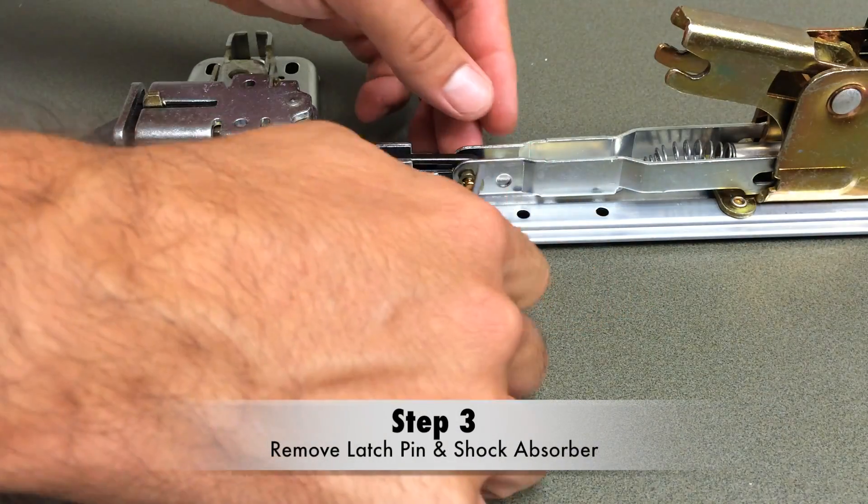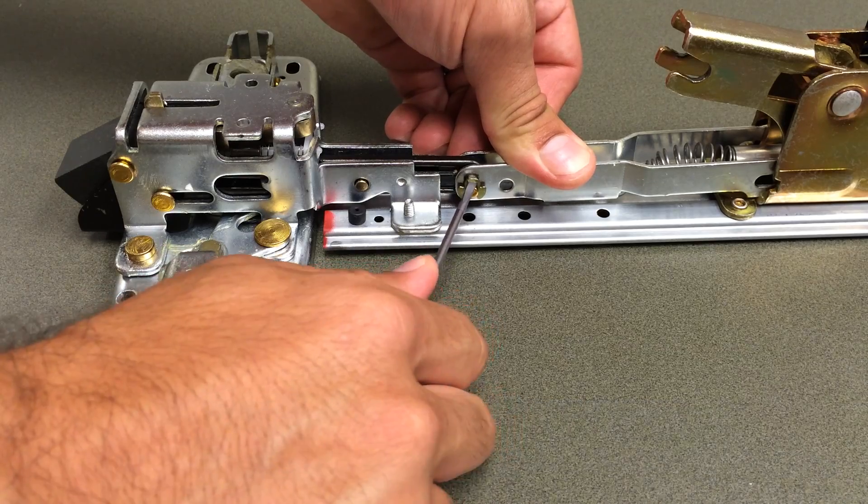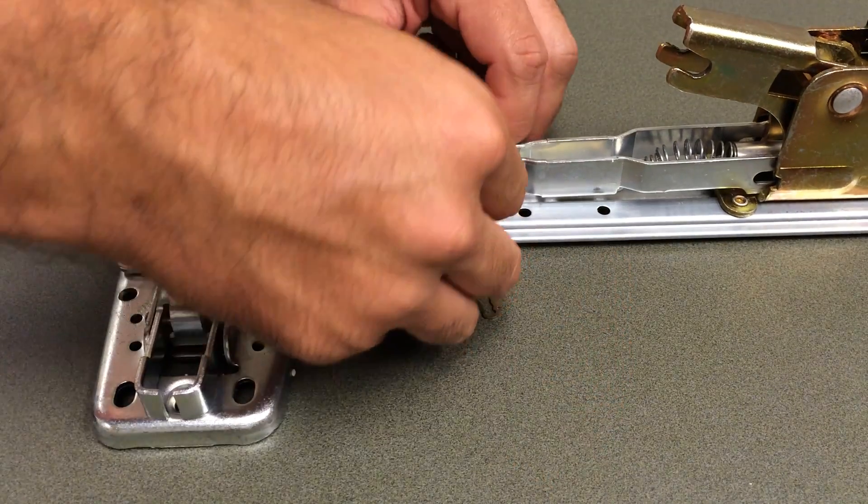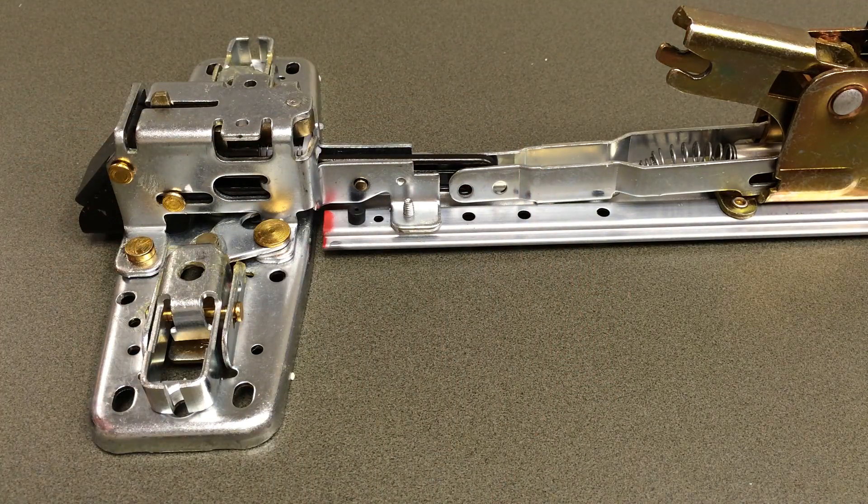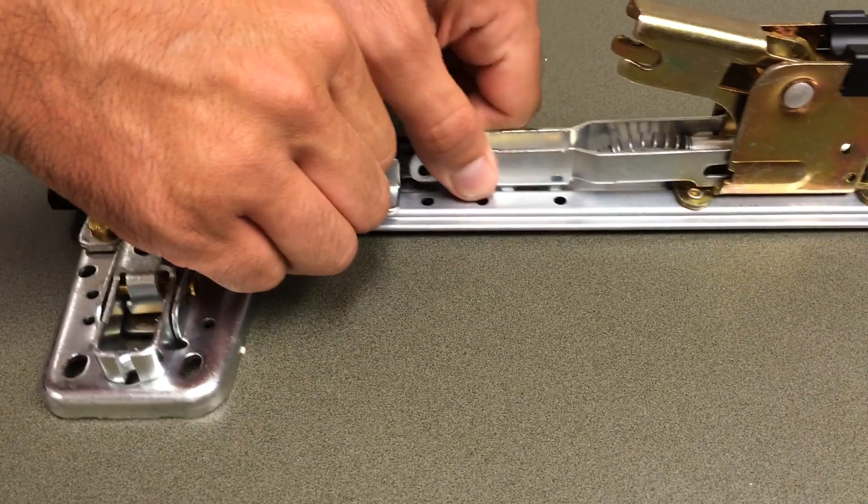Next we're going to remove the latch pin. With the small flathead I'm just going to pull up on the C clip. Once I have that C clip off I'm going to remove the pin. We need to do this step because this bracket that attaches to the latch needs to move freely.